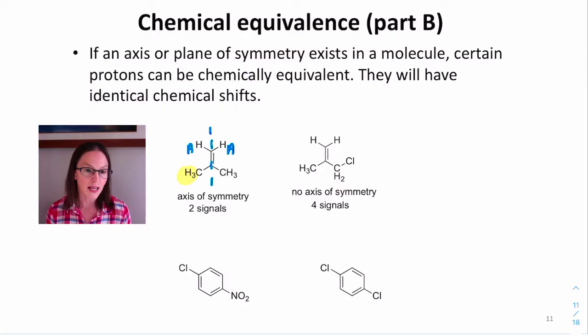Similarly, the protons on the left-hand methyl are chemically equivalent to the protons on the right-hand methyl. They're all sitting in the same chemical environment on average. We can call them HB. So for this spectrum, we expect to see two signals, one for HA, another for HB.